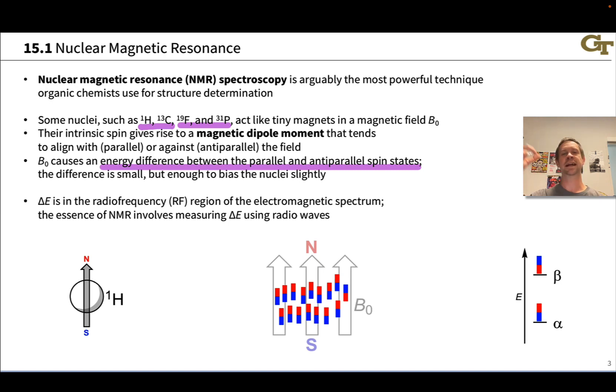That energy difference can be probed by light. We've seen how light can cause excitations from a lower energy to a higher energy state. As it turns out when it comes to NMR, the right frequency range for this light is in the radio frequency region of the spectrum. So delta E is in this radio frequency region, and the essence of NMR really is measuring this delta E using radio waves impinging on a sample with these NMR active nuclei. The two most important are protons and carbon-13s for organic chemistry. This is going to give us great information into the electronic environments of hydrogens in organic molecules and carbons as well.